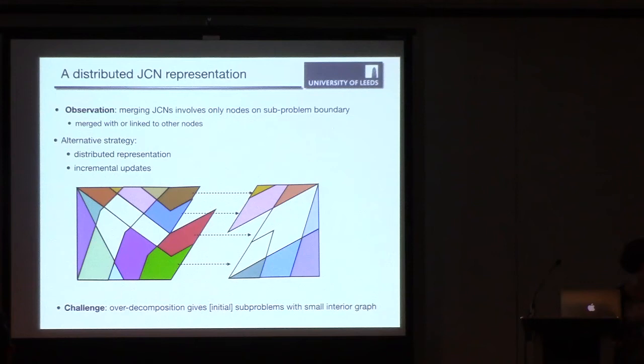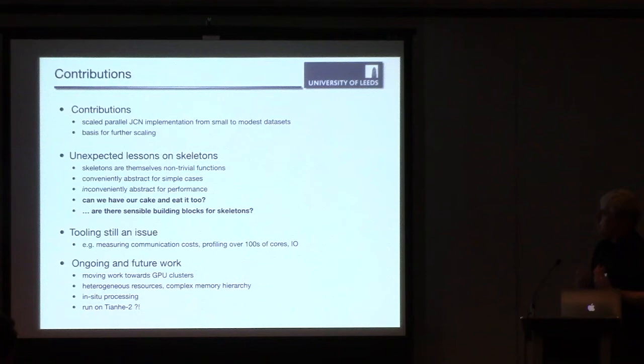Okay. So to wrap up, where we've got to at the moment is we've now got an implementation of the algorithm which is more scalable. On the shared memory machine, we could get up to data sets of maybe 100 by 100 by 100. With Isabel, we've got 25, maybe 30, 40 times that running comfortably on a relatively small number of nodes on the cluster. So we've got a basis for doing further scaling.